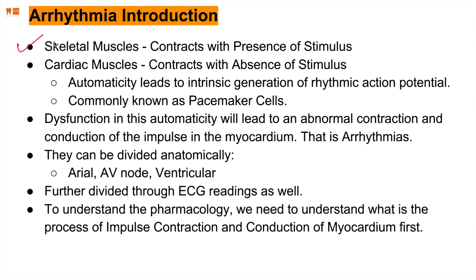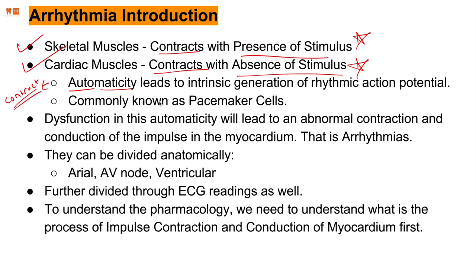Arrhythmia introduction. Skeletal muscles contract upon the presence of a stimulus — for example, a hormonal change or an electrical shock. But cardiac muscles are independent of that; they contract even in the absence of a stimulus. So they can self-monitor, and that's why they're known as automaticity — which in other words is contraction. It's the intrinsic generation of action potential on its own, commonly handled by pacemaker cells. Remember, a pacemaker is an external battery-operated device placed in the heart to treat arrhythmias.